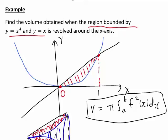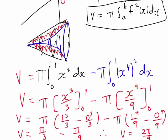As in the previous example, I strongly recommend setting up a sketch of the situation if you have any doubts about what's happening. Here, because we were looking at a region bounded by two curves, it was very helpful to know which was the upper curve and which was the lower curve, in order to set up the problem correctly and find the volume of the resulting solid.